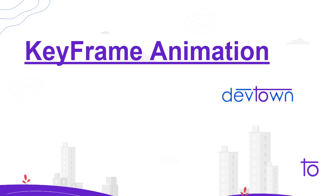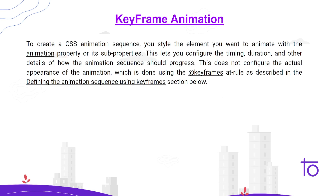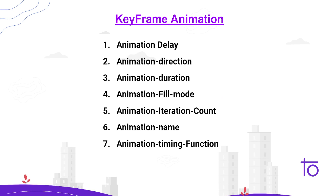Before that, let me introduce you to some of the animation properties we have. Animation in CSS basically means if you want to move one particular thing from one position to another with respect to its current position. We can use animations for things like a progress bar, or for the animated content that many websites use today just to engage users.